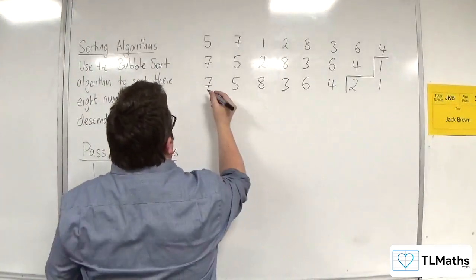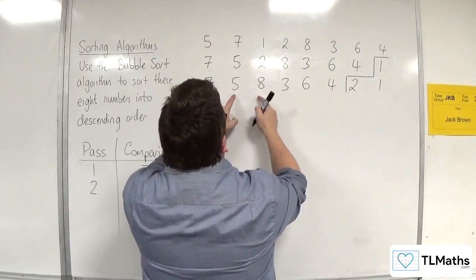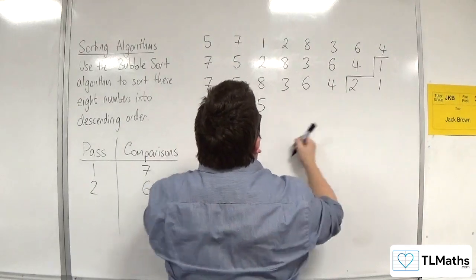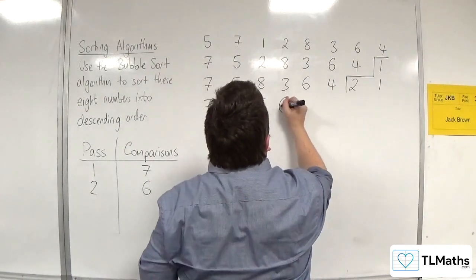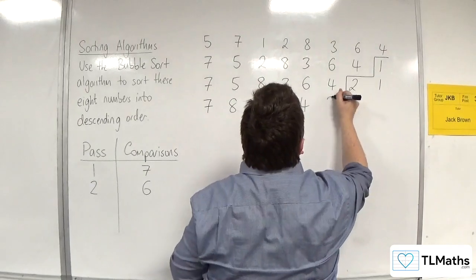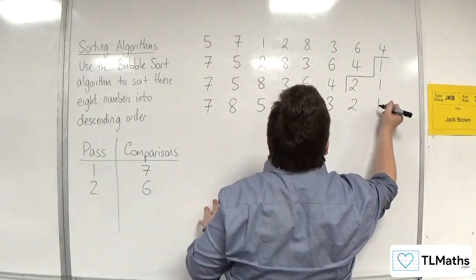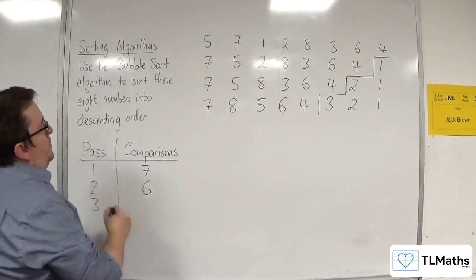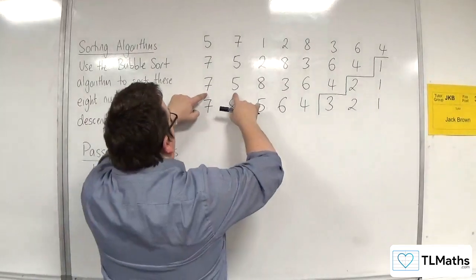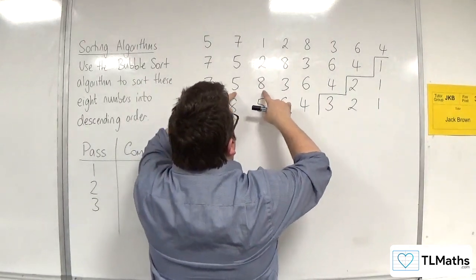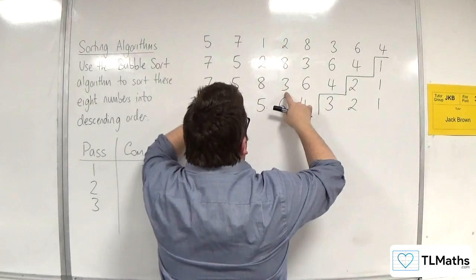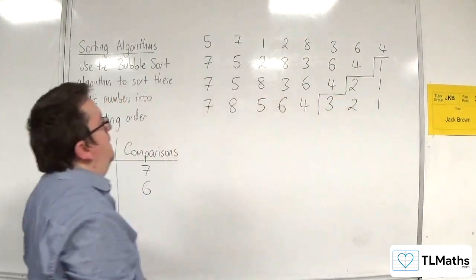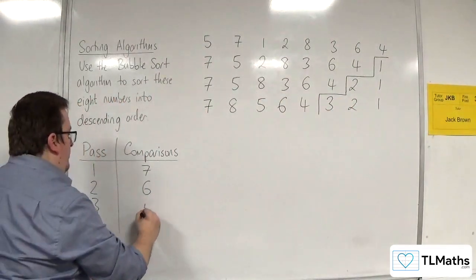Then we've got seven and five — seven is larger than five. Five and eight — eight is larger than five. Five and three — five is larger than three. Three and six — six is larger than three. Three and four — four is larger than three. So three has bubbled to the top this time. So in the third pass, seven and five were compared — one, two, three, four, and five. So there were five comparisons in total.